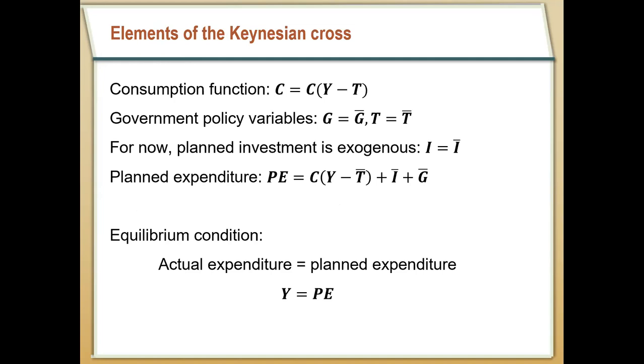So that leaves us with investment. We're going to assume that planned investment, at least for now, is exogenous, that a business chooses to invest yesterday based on what they think today is going to be. But that really doesn't matter when we get to today. So planned investment is going to be exogenous. It's going to be determined before we even start whatever period we're in. And so planned expenditure is just going to be the sum of those three. It's going to be consumption plus planned investment plus government spending.